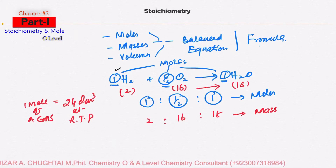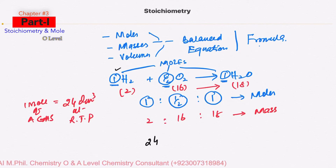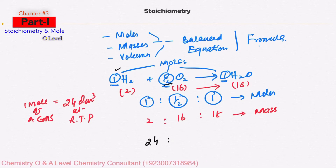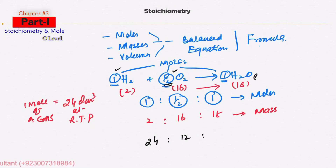The volume of 1 mole of hydrogen at RTP will be equal to 24 dm³, and half a mole of oxygen will be equal to 12 dm³. Since H₂O is a liquid at room temperature, this formula is not applicable for water.